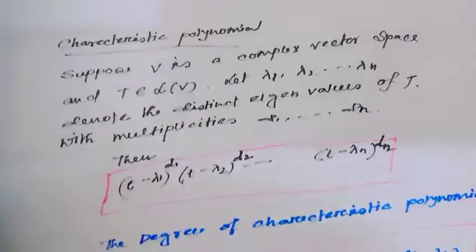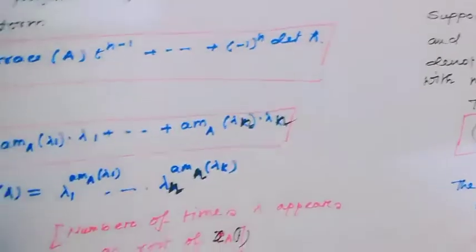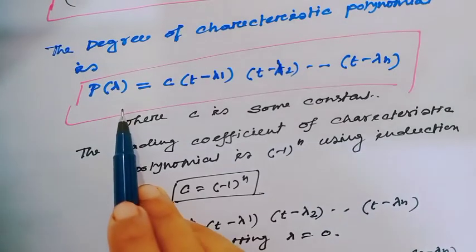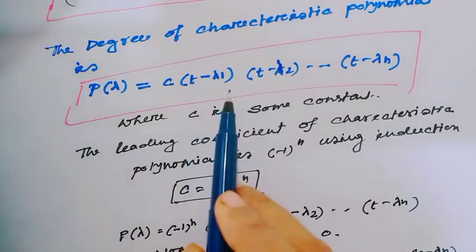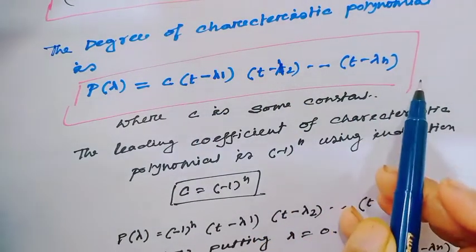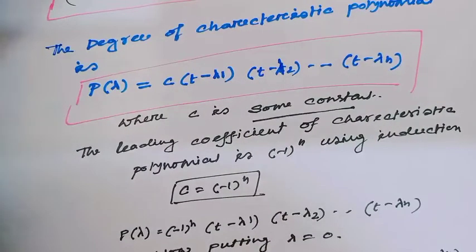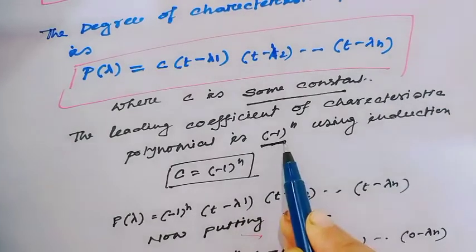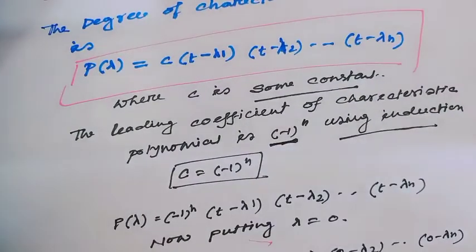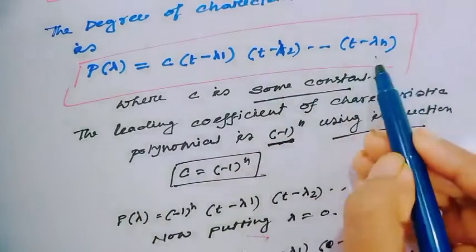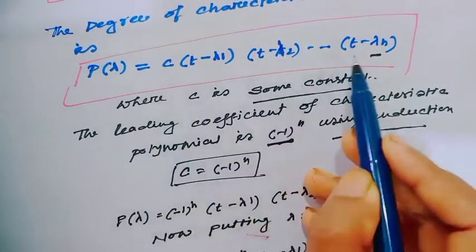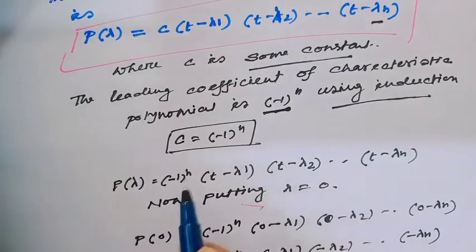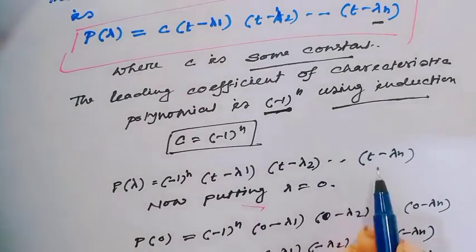Now I will show why the product of eigenvalues equals the determinant of matrix A. Consider the characteristic polynomial p(λ) = c·(t − λ₁)(t − λ₂)⋯(t − λₙ), where c is some constant depending on the leading coefficient. By induction, this leading coefficient is actually (−1)^n. So p(λ) = (−1)^n · (t − λ₁)(t − λ₂)⋯(t − λₙ).